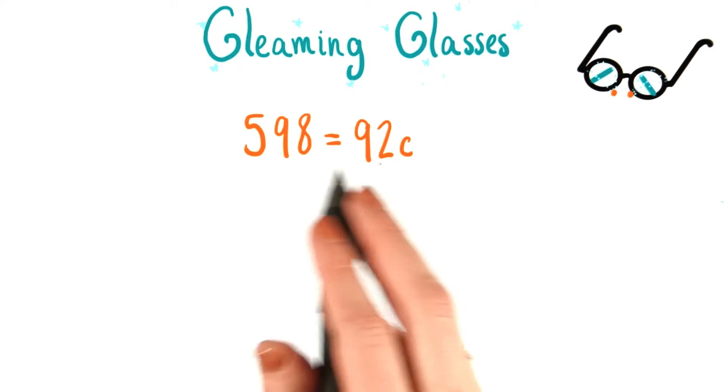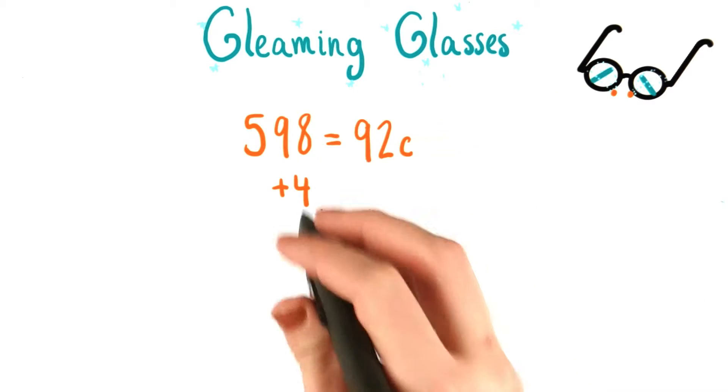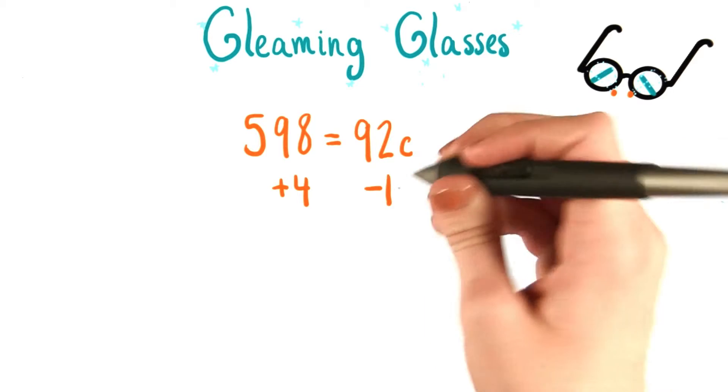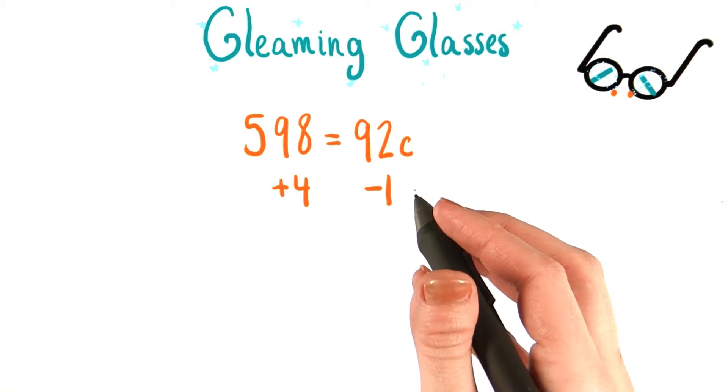If these two things start out having the same value, but I, for example, add 4 to the left side and subtract 1 from the right side, then they can't possibly equal one another anymore, since I've changed them in different ways.